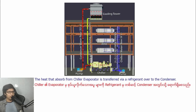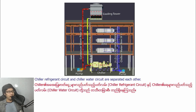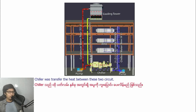The heat that is removed from the chiller water is transferred via a refrigerant over to the condenser. The chiller refrigerant circuit and the chiller water circuit are separated from each other. The chiller transfers heat between these two circuits.